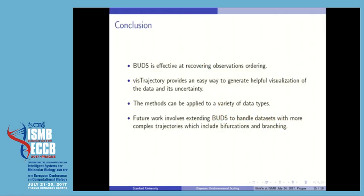To conclude, BOTS is meant to recover the observation ordering in datasets that contain a latent continuum, and the trajectory software was intended to help visualize that ordering and the uncertainties involved. The method can be applied to a variety of data types, and in the future we would like to extend it to more complex datasets with trajectories that include bifurcations or branching.